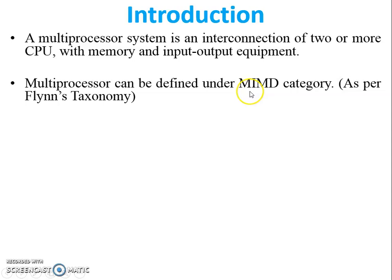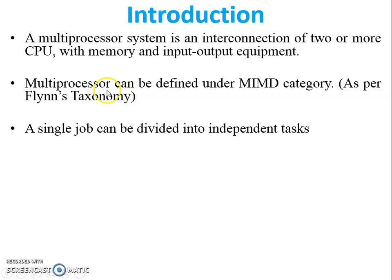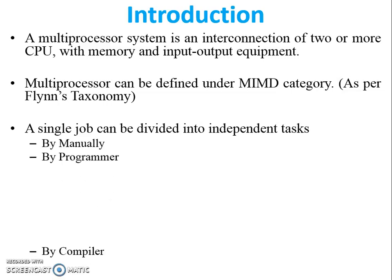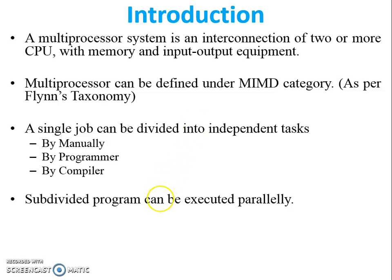Multiprocessors fall in the MIMD category because they work with multiple instructions and multiple data at the same time. A single job can be divided into independent tasks — if any large program is available in the system, we can divide it into sub-tasks manually by the programmer or by the compiler.